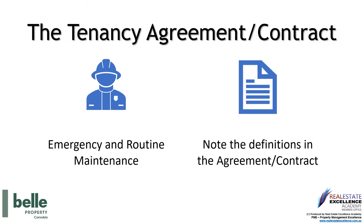The standard terms of the Tenancy Agreement Contract Form 18A set out the legal definition of what is emergency maintenance and what is routine maintenance. Please note the definitions in the agreement. As stated, everything is legally required to be in writing under this tenancy contract. However, if you have an emergency repair situation as per the definition, please phone our agency and refer to the agreement for emergency after-hours contact details and procedures, and we will confirm in writing at a later date.